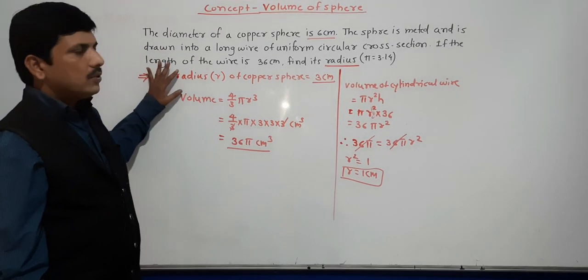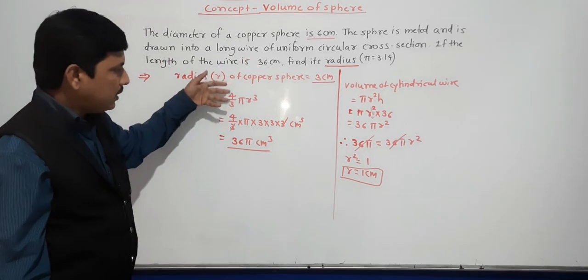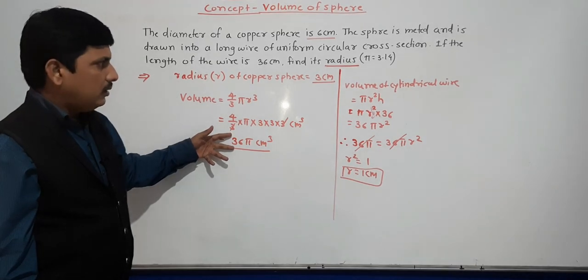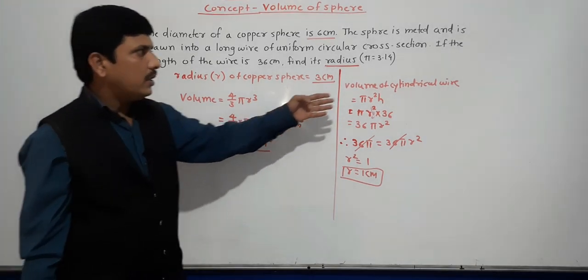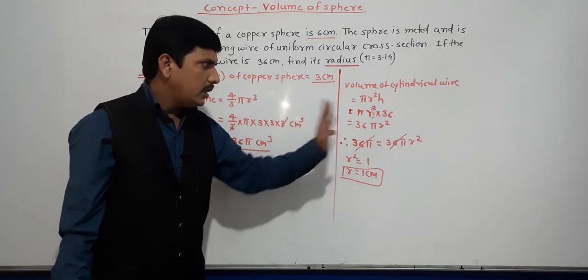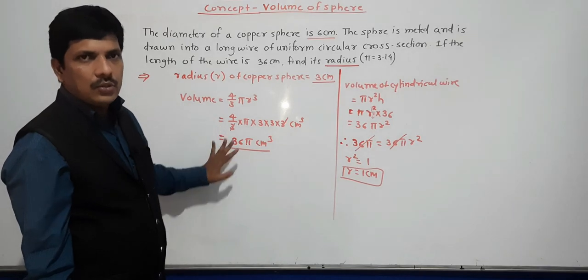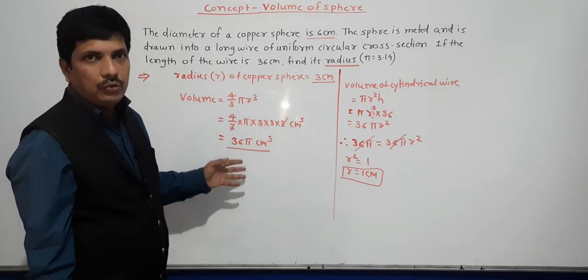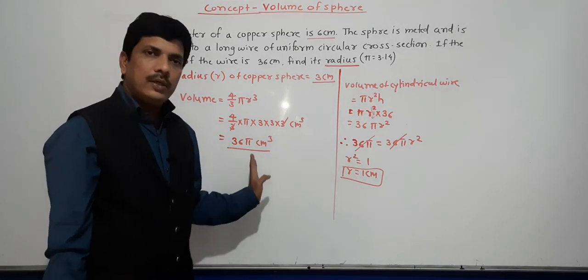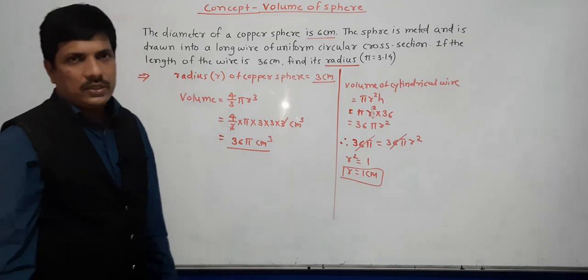To summarize: we found the volume of the copper sphere using radius 3 cm, giving 36 pi cm cube. Then using the volume of cylinder formula (pi r square h), with h equal to 36 cm, we equated the two volumes. Pi cancels from both sides, and 36 also cancels, leaving r square equals 1 and radius equals 1 centimeter.